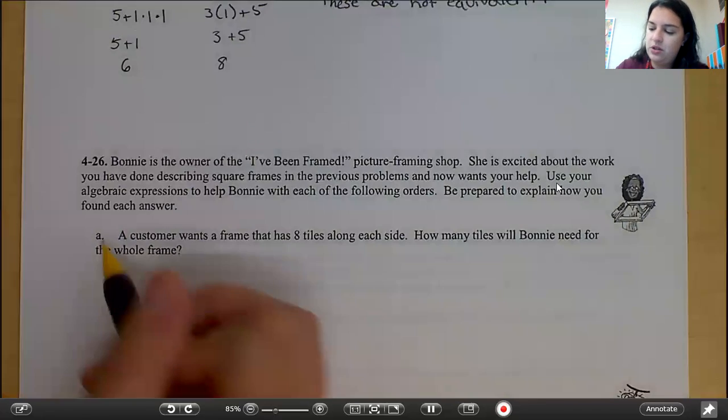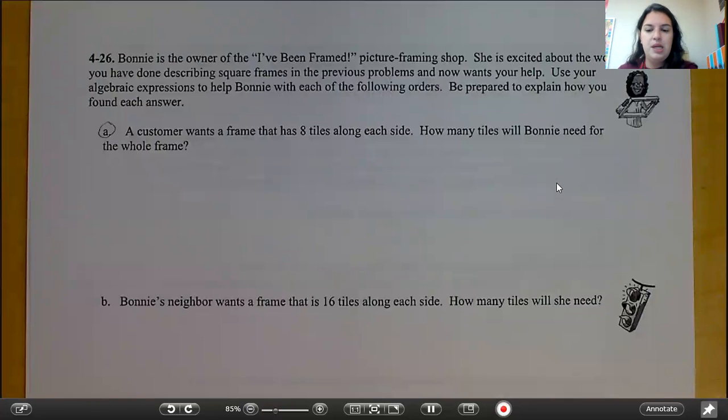Okay, this is something that we're going to save to talk about in class. Part B says, Bonnie's neighbor wants a frame that has 16 tiles along each side. How many tiles will she need? Go ahead and pause your video and answer part B.